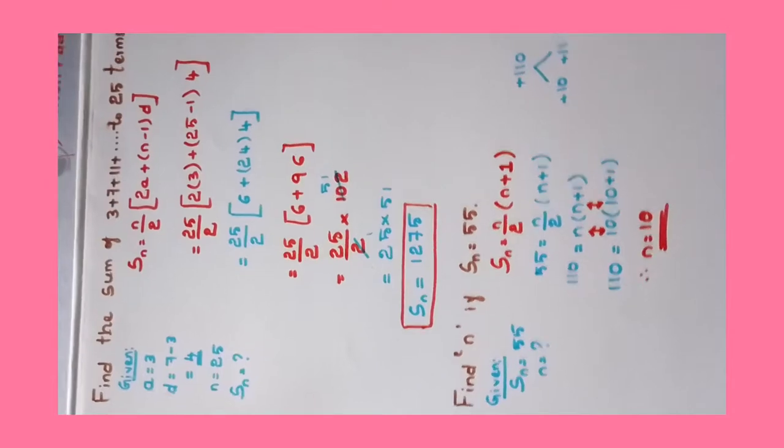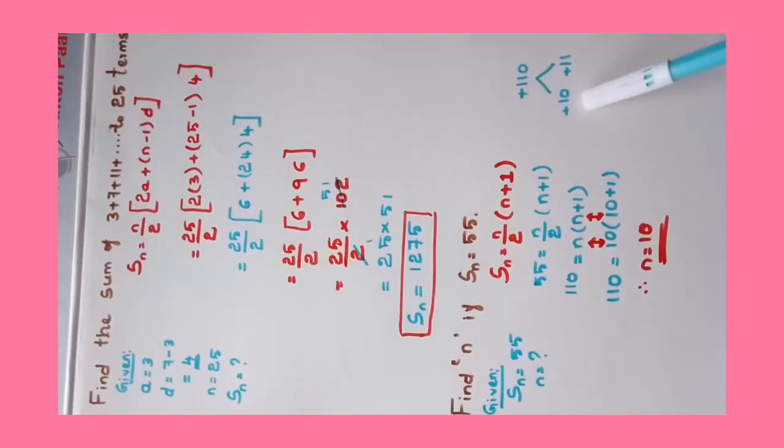Substitute those values: 110 = 10 * (10 + 1). 11 can be written as 10 + 1. Compare with the above, you'll get the n value as 10. Clear? Easy. So prepare well.